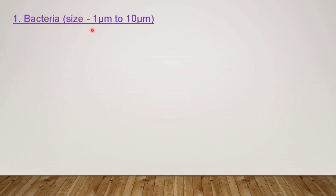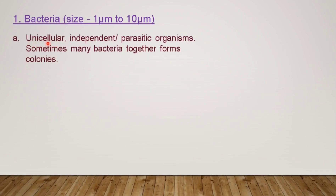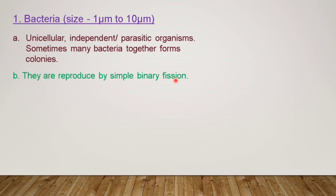The size of bacteria is 1 micrometer to 10 micrometers. Bacteria are unicellular, meaning single-celled organisms. They can be independent — not depending on others for food — or parasitic, depending on other organisms for food. Sometimes many bacteria together form colonies: if bacteria are growing and increasing in a particular area, they can form colonies. Bacteria reproduce by simple binary fission.